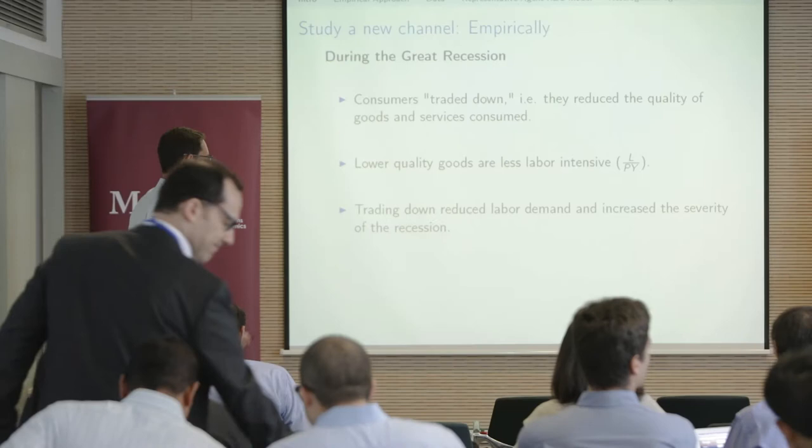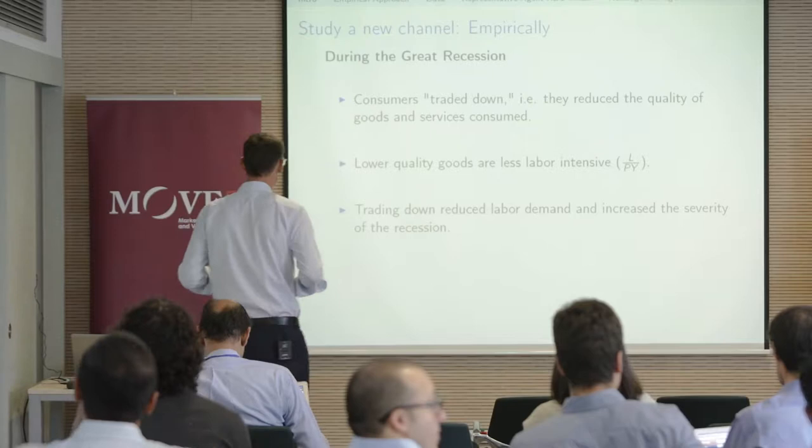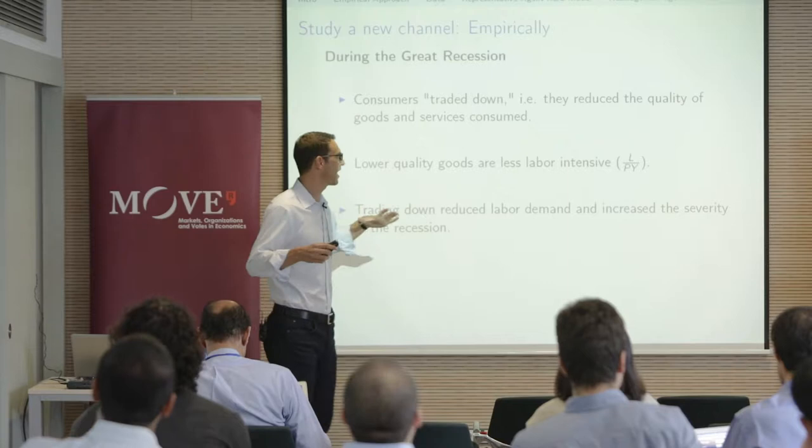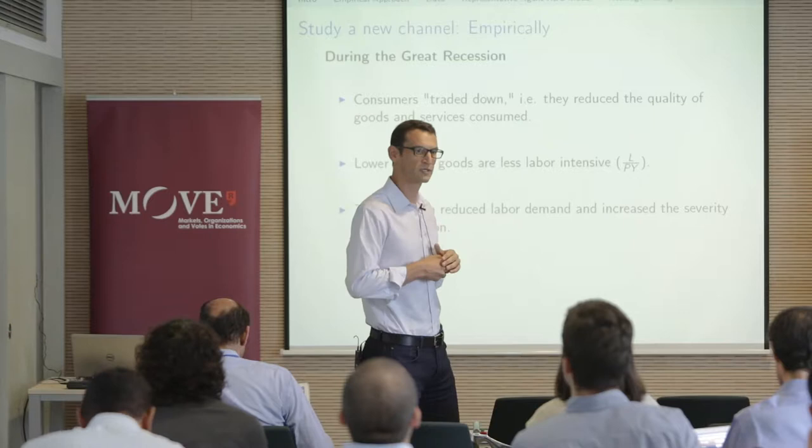So this is what we're doing — just a big overview. On the empirical aspect, we're going to learn a new channel, and I'm going to show you some evidence that hopefully will convince you that during the Great Recession, two things happened. Consumers basically traded down in the sense of the quality of goods they were consuming — they basically went down to lower quality goods.